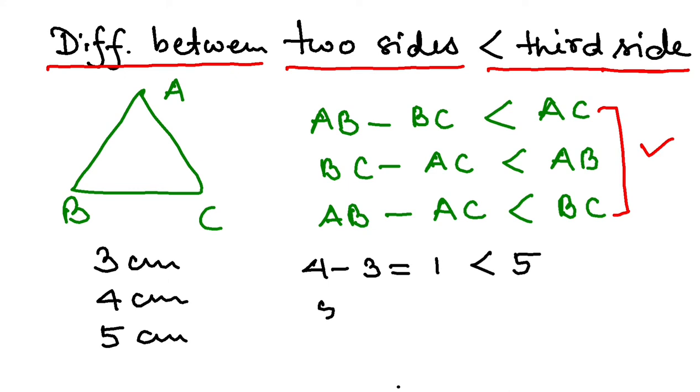If I take five minus four, that is one, less than three. And if I take five minus three, that is two and is also less than four.